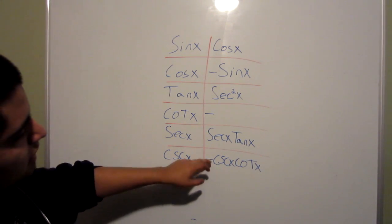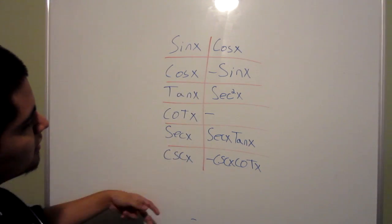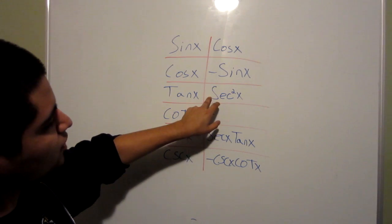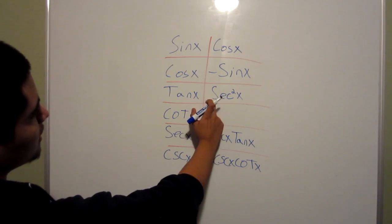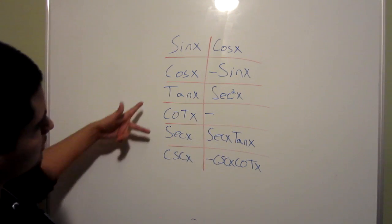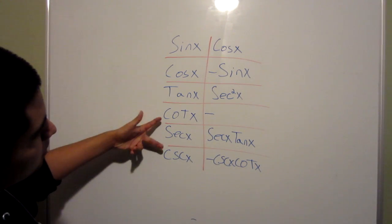If you keep memorizing that every other one is negative, you'll keep it like this. And know that these two are squared. Even if you don't know what trig function is the derivative of tangent x, know that it's squared. The same thing for cotangent.